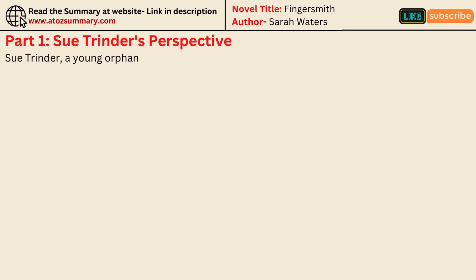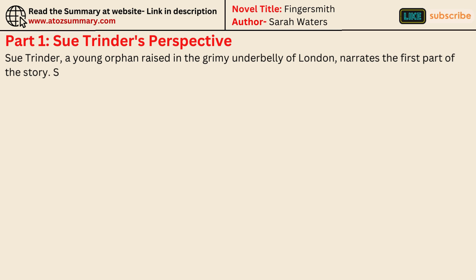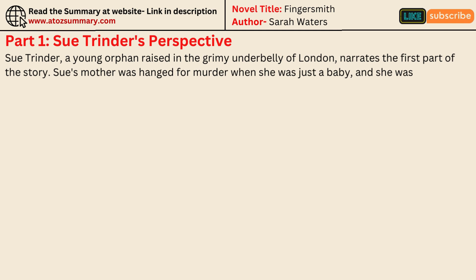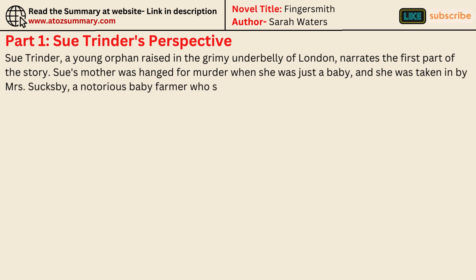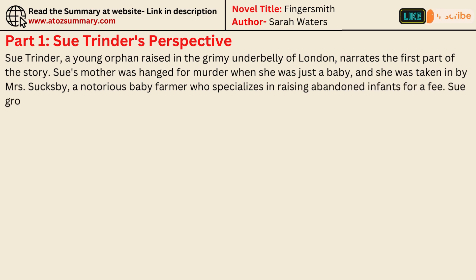Sue Trinder, a young orphan raised in the grimy underbelly of London, narrates the first part of the story. Sue's mother was hanged for murder when she was just a baby, and she was taken in by Mrs. Sucksby, a notorious baby farmer who specializes in raising abandoned infants for a fee. Sue grows up among thieves and con artists, learning the tricks of their trade.